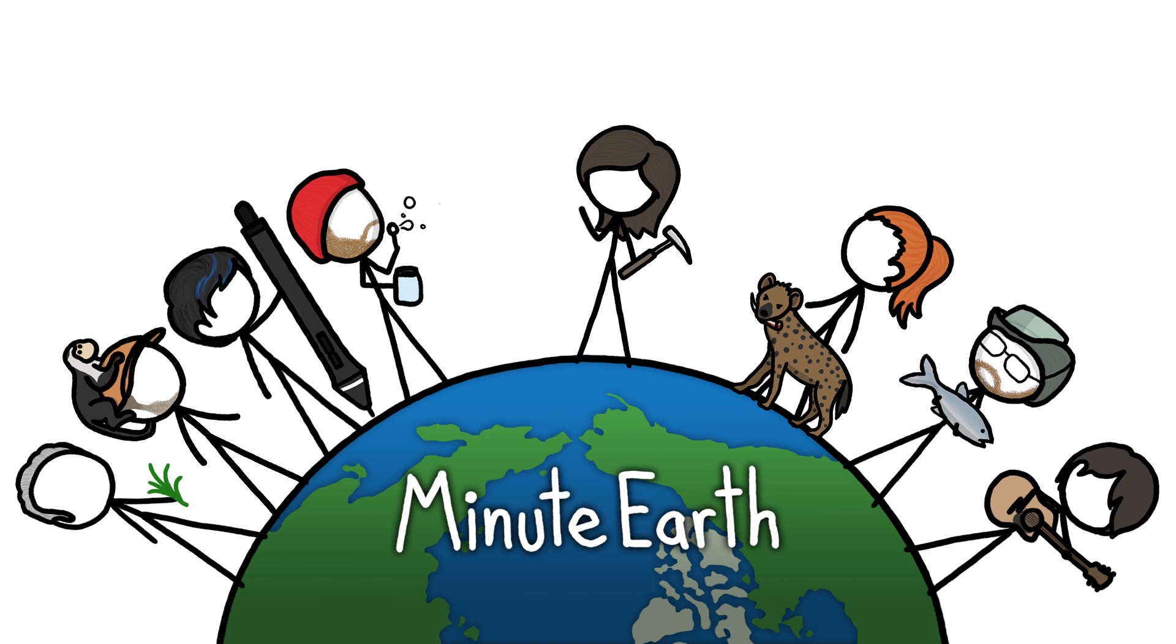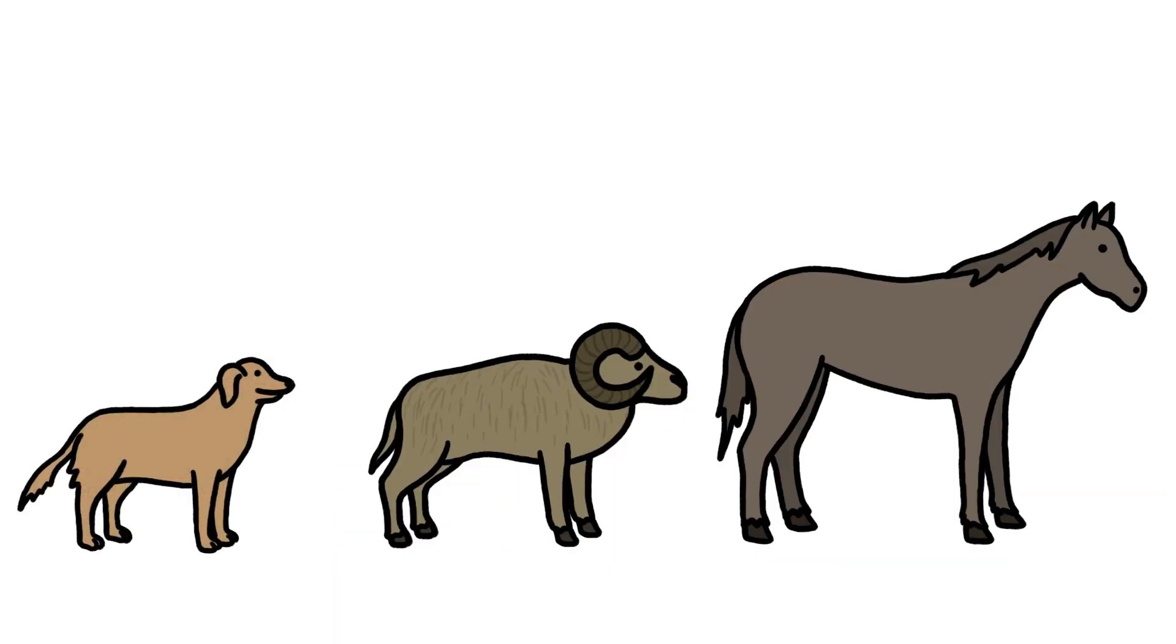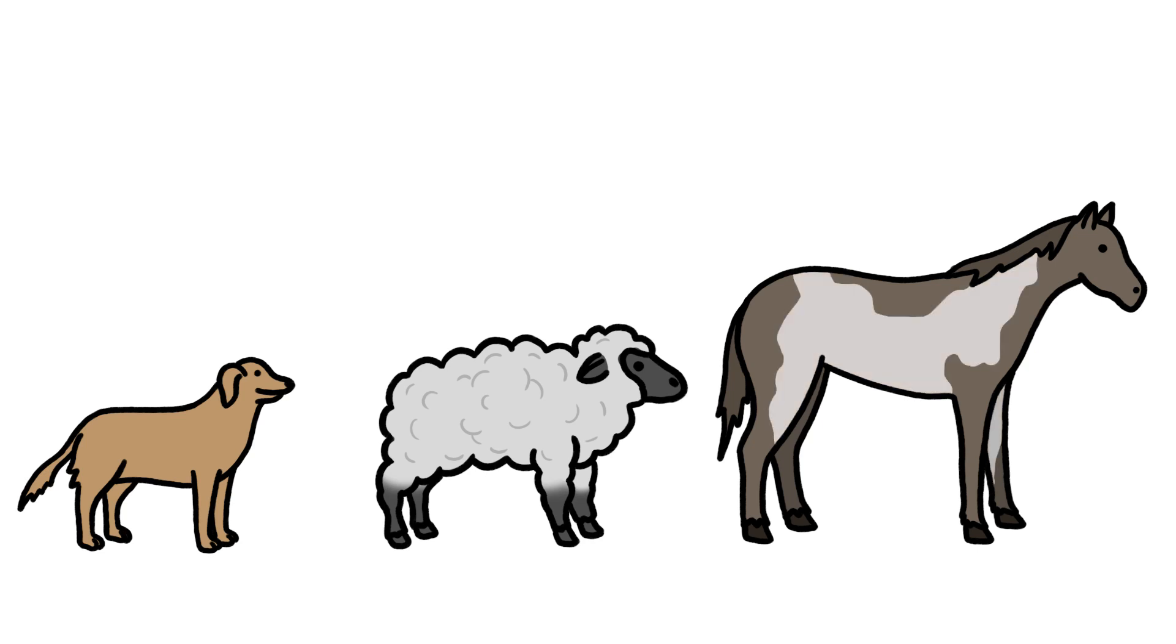Hi, this is Emily from Minuter. Domestication has puppified dogs, fluffified sheep, and spotified horses.